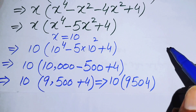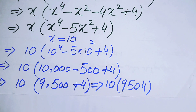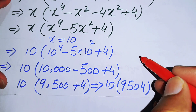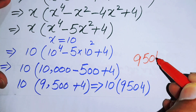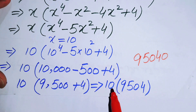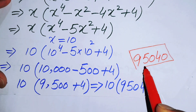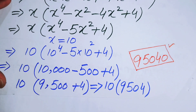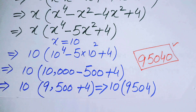So 10 times 9,504 equals 95,040. This is our final answer. Thank you so much for watching this video — please subscribe to my channel for more exciting videos.